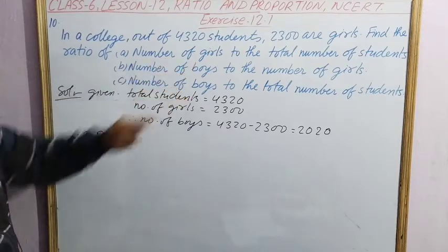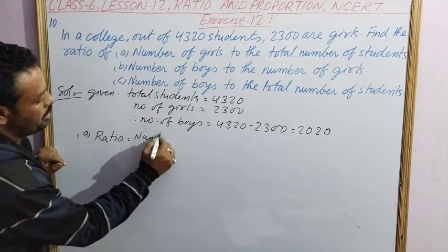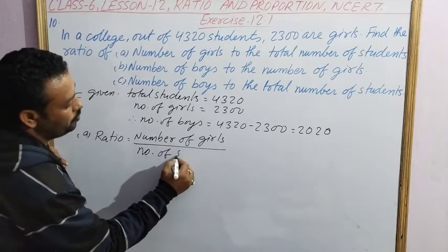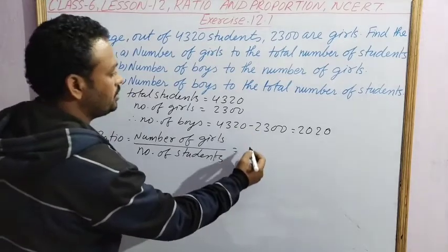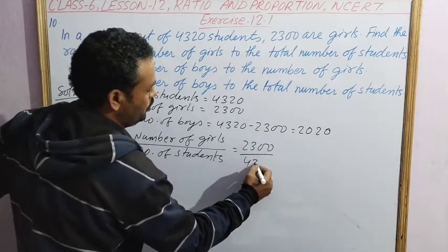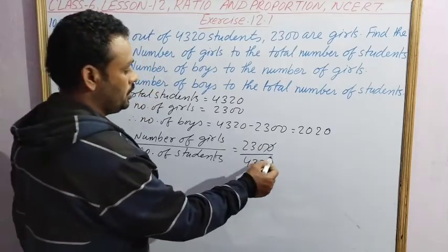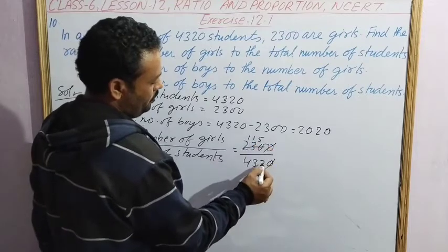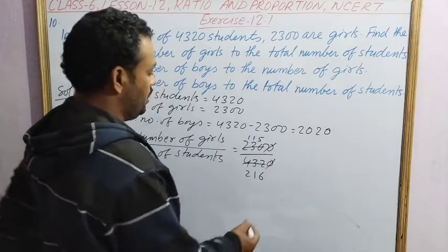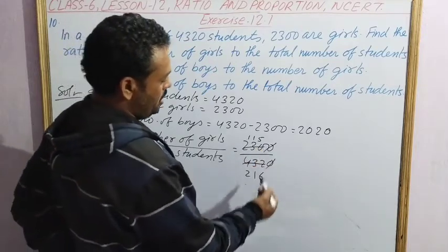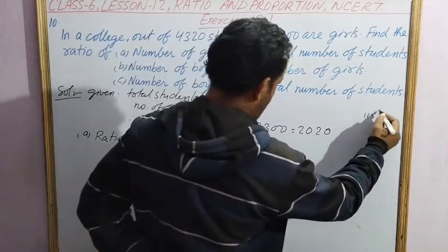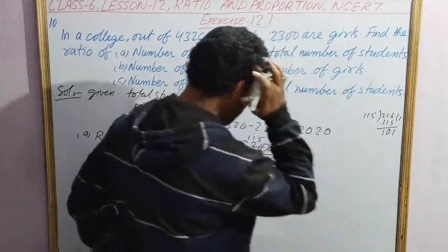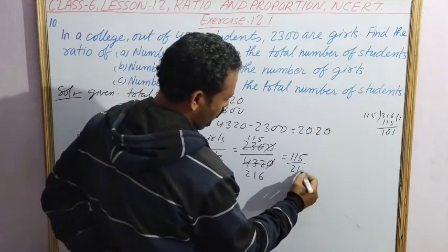First ratio: number of girls to number of students. Number of girls in the numerator, number of students in the denominator: 2300 by 4320. Divide by 2: 1150 by 2160. Divide by 2 again: 115 by 216. We can find the HCF to confirm it is not further divisible. So the ratio is 115 is to 216.